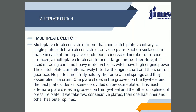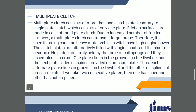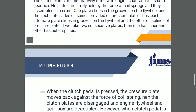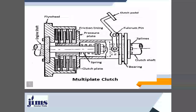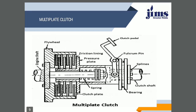Now, coming to the multi-plate clutch — the working is similar, but the difference is that there are multiple plates. As you see in the diagram, friction lining plates are in between the pressure plate and the flywheel. Compared to the single-plate clutch which has only one plate with friction lining on both sides, here in the case of multi-plate clutch you see a number of plates, springs, clutch pedals, fulcrums, splines, clutch shafts, bearings, clutch plates, and engine shafts.